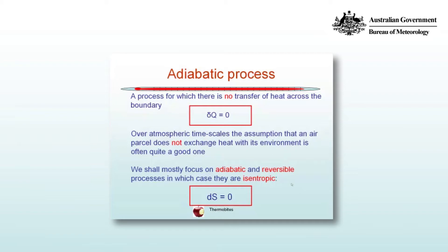So, the adiabatic assumption is particularly good in the free atmosphere. We shall mostly focus on adiabatic and reversible processes, in which case they are also isentropic, that is to say ds is equal to zero.